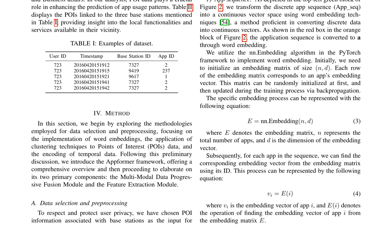The paper highlights the importance of POI data, which reflects socioeconomic activities characteristic of the areas around the base stations, encompassing categories such as medical care, hotels, and business affairs. Table 2 displays the POI linked to three base stations mentioned in Table I, providing insight into the local functionalities and services available in their vicinity. Furthermore, the paper introduces the Appformer framework, offering a comprehensive overview and elaborating on its two primary components: the multimodal data progressive fusion module and the feature extraction module. This framework is designed to enhance the prediction of app usage patterns by leveraging the socioeconomic activities characteristic of the areas around the base stations.